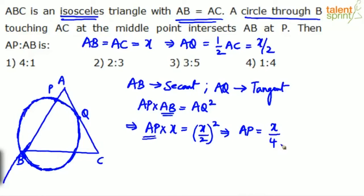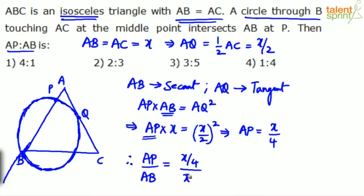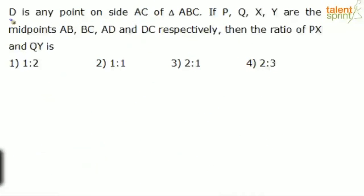So AP is x by 4 and AB is x. Therefore AP by AB equals (x/4) divided by x, the x's cancel and we get 1 by 4. So 1 is to 4 is the final answer. An interesting combination of triangles and circles!